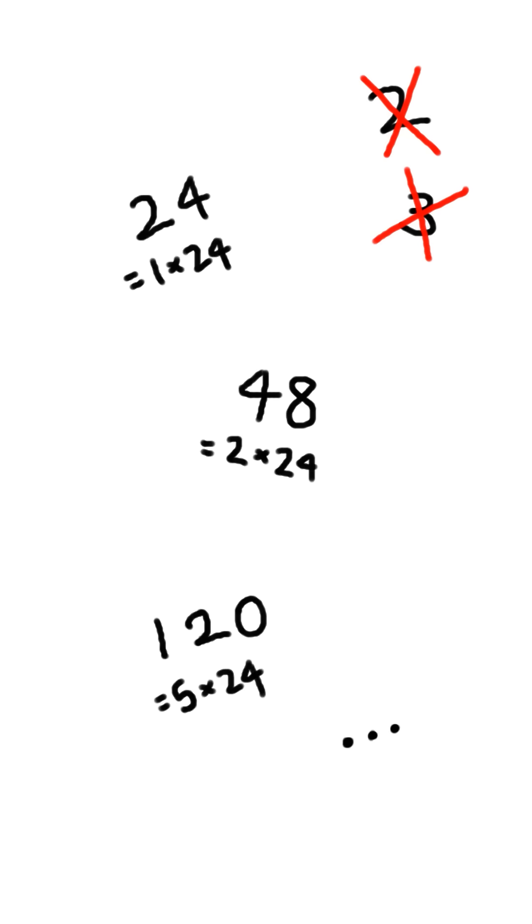First up, pick any prime number that's not 2 or 3, square it, then subtract 1. You'll always end up with a number divisible by 24.